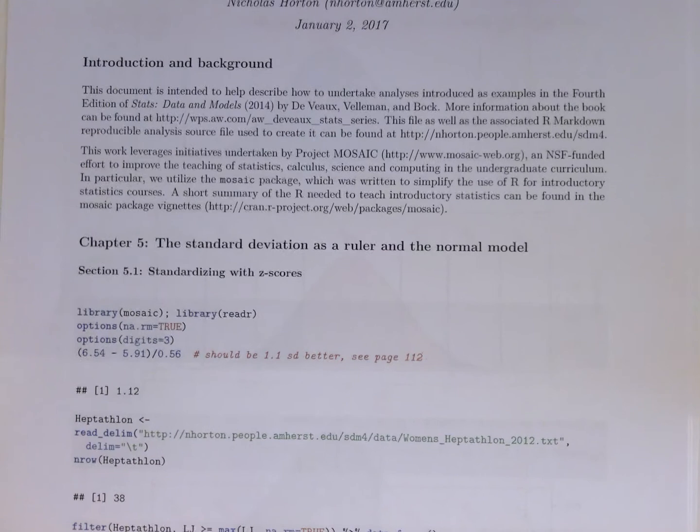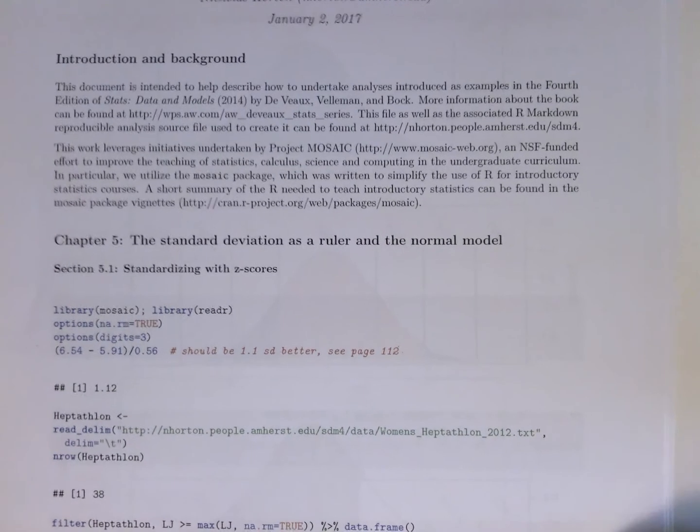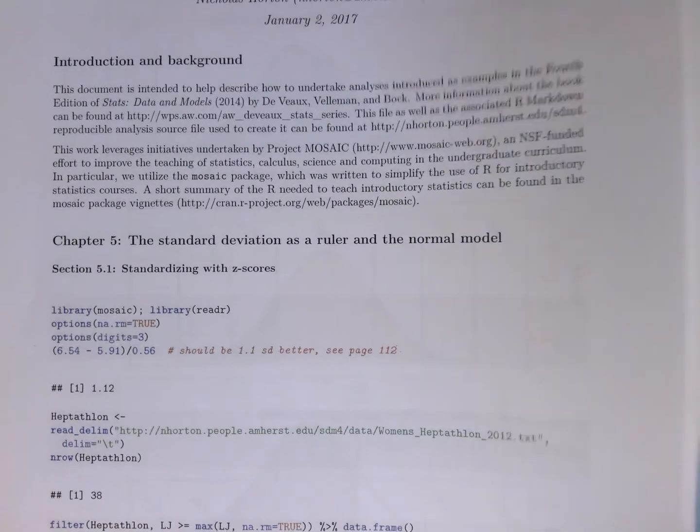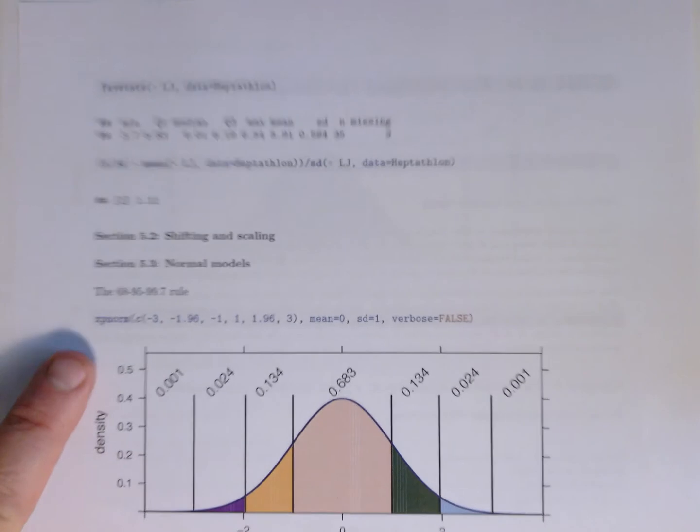This is a place where things have gotten much simpler because of the advent of better technologies. We can read in the data for the Olympics and we can use the xpNorm function.